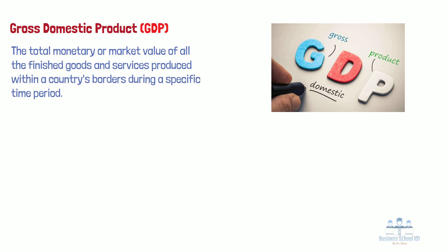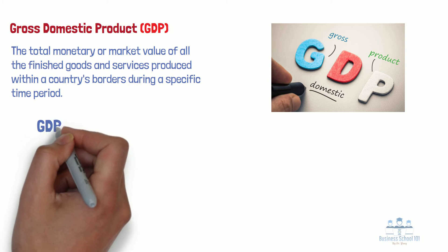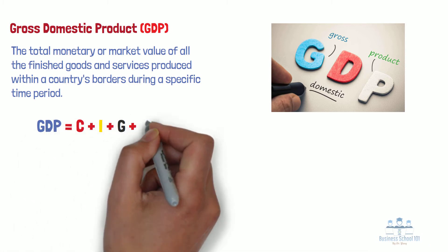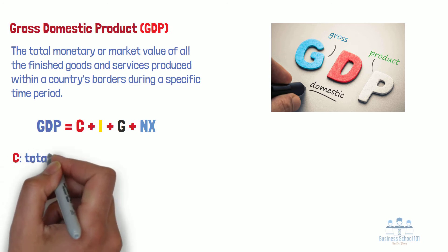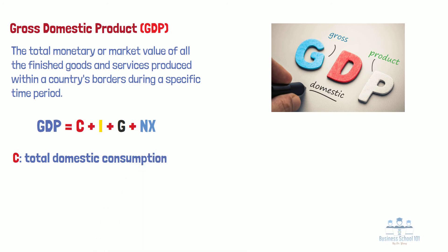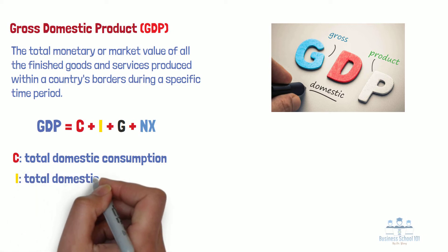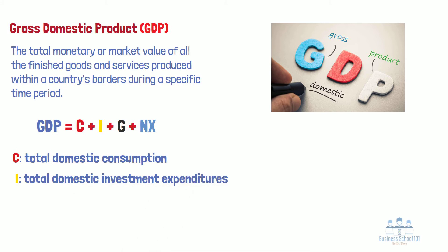With the expenditure approach, GDP is calculated by C plus I plus G plus NX. Here, C refers to the total domestic consumption, or the total amount spent on domestically produced final goods and services. This is anything a household or individual would spend money on, like non-durable goods such as food, clothing, and so on. I refers to the total domestic investment expenditures, which include not only investments in stocks and bonds, but also investments in equipment such as computers and commercial buildings, which will be useful over a long period of time.